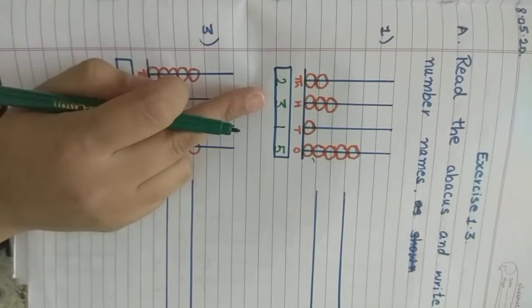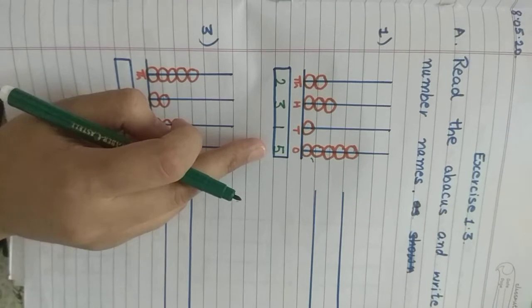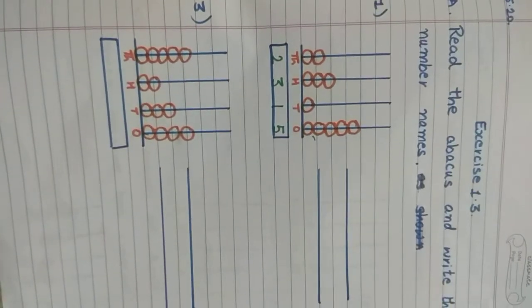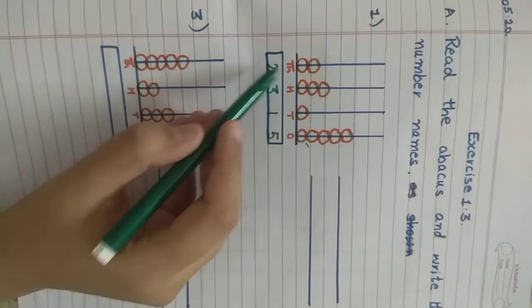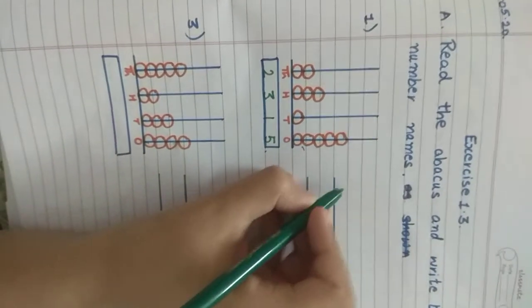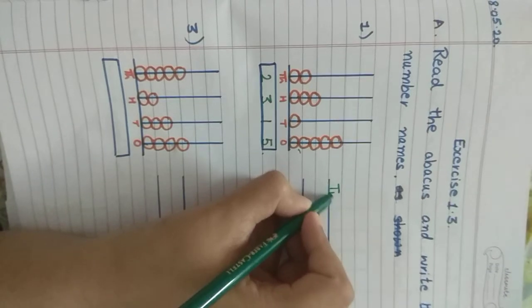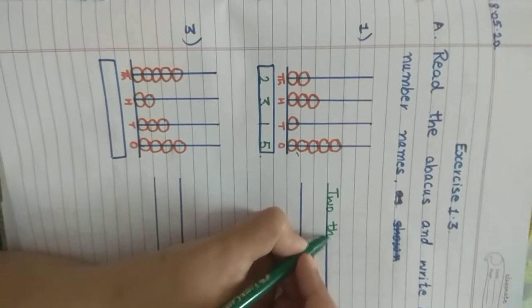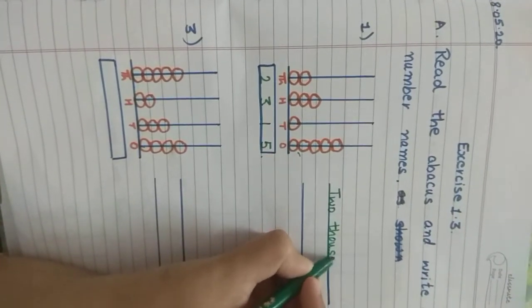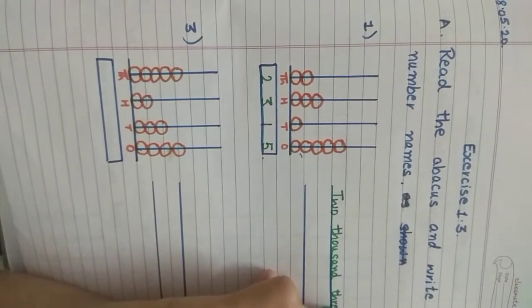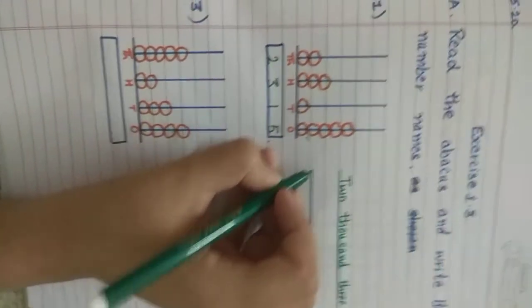So the number formed here is 2,315. Now we will write down 2,315 and also write down the number name for the same. How many thousands do we have? 2,315.